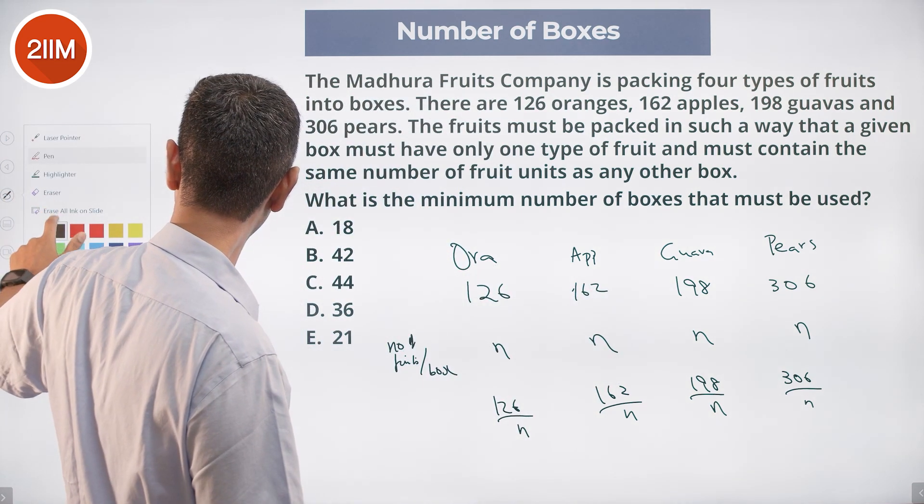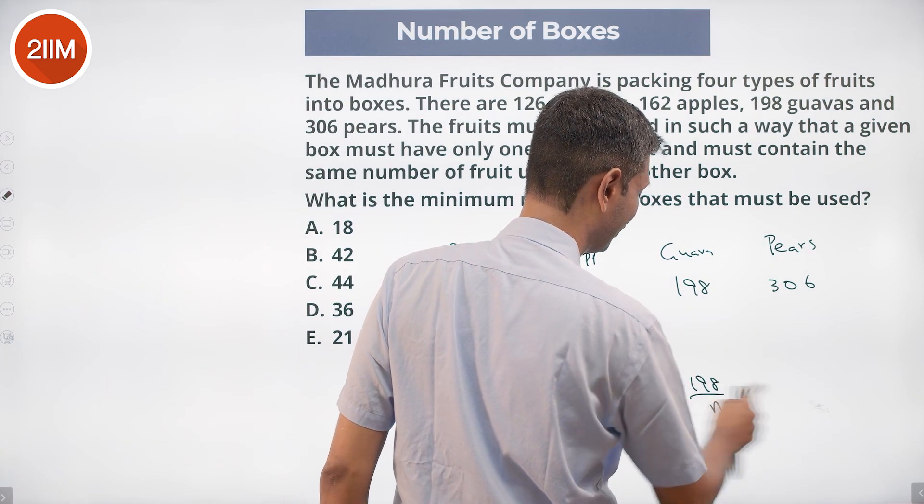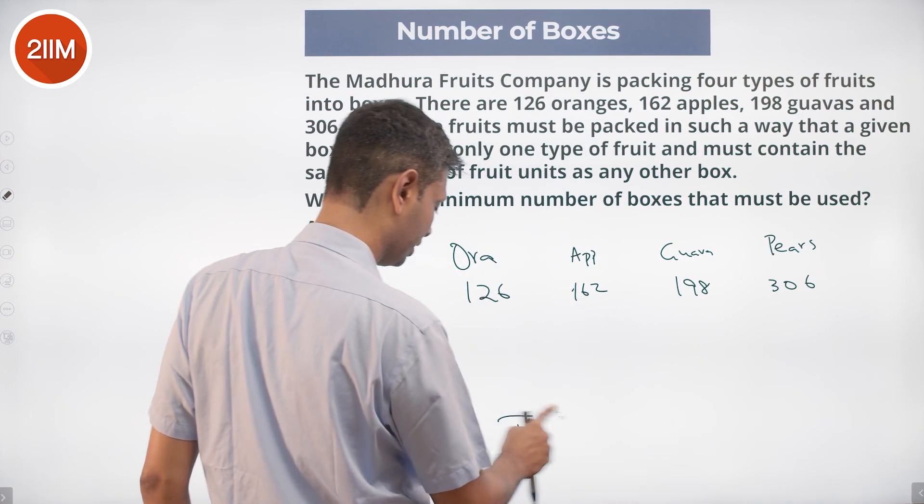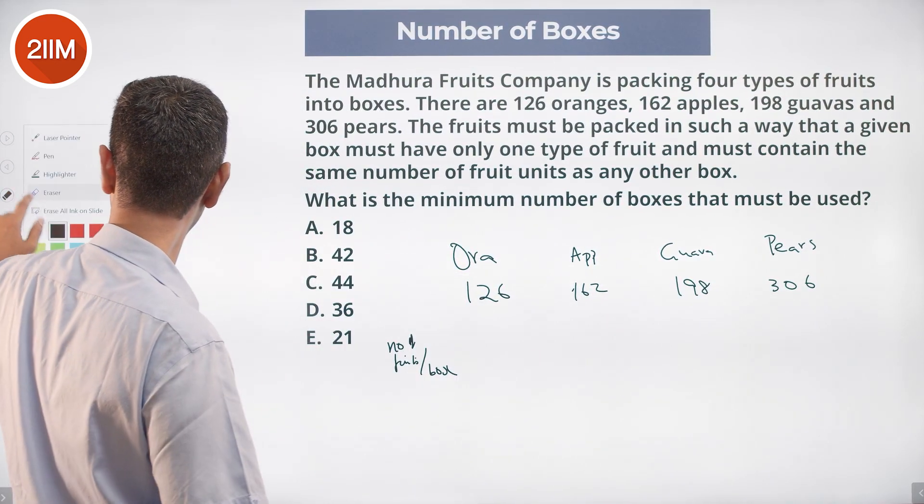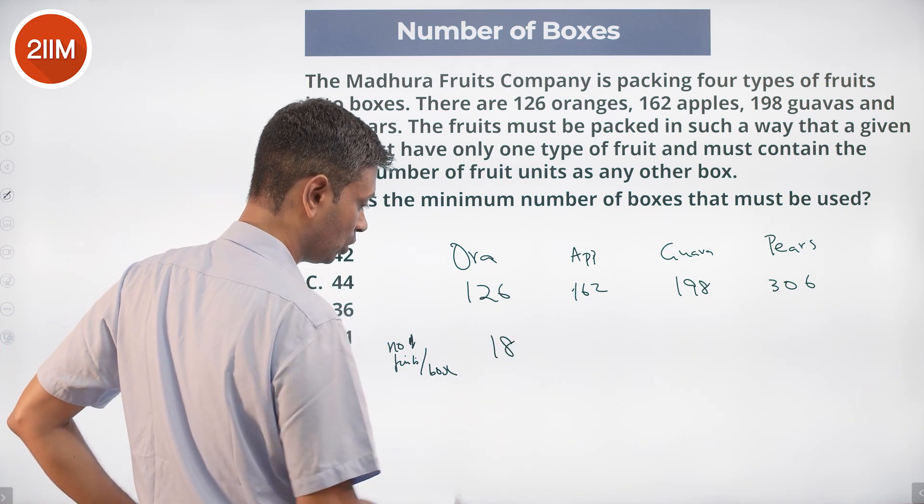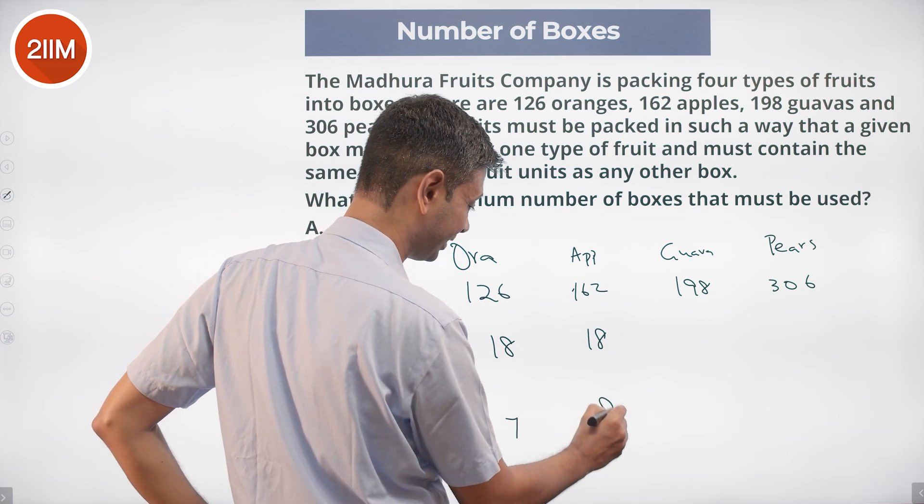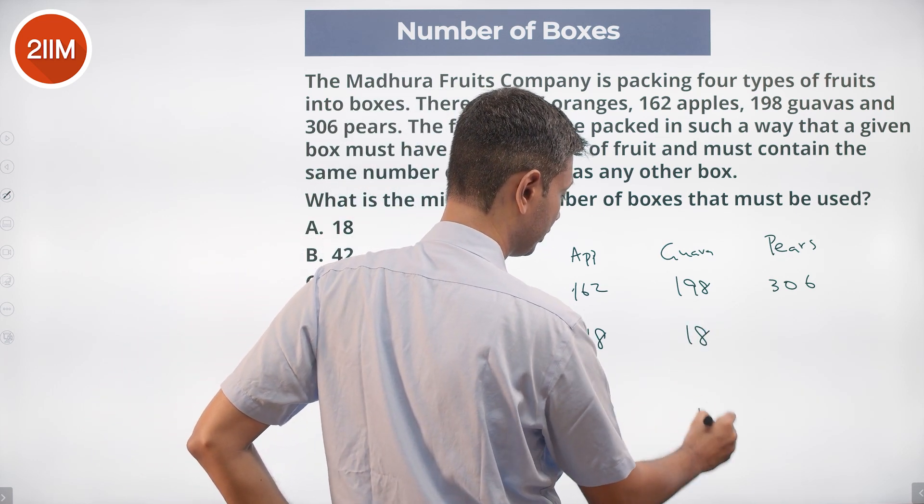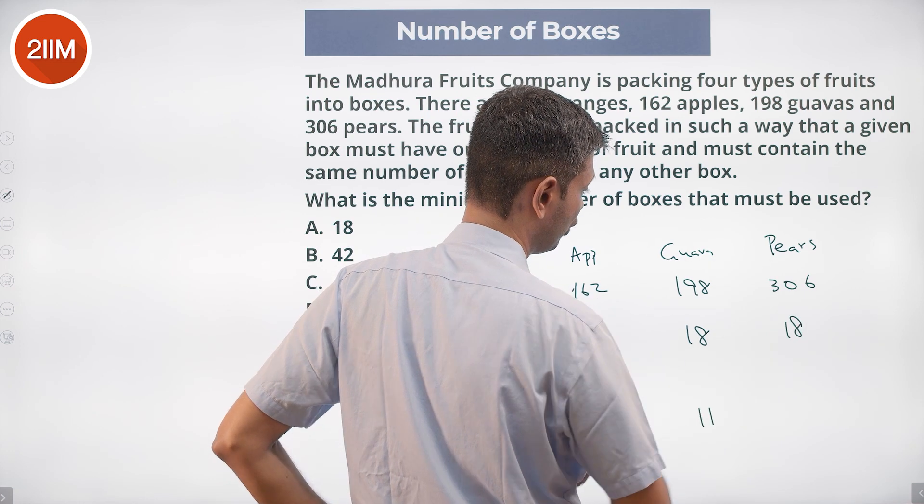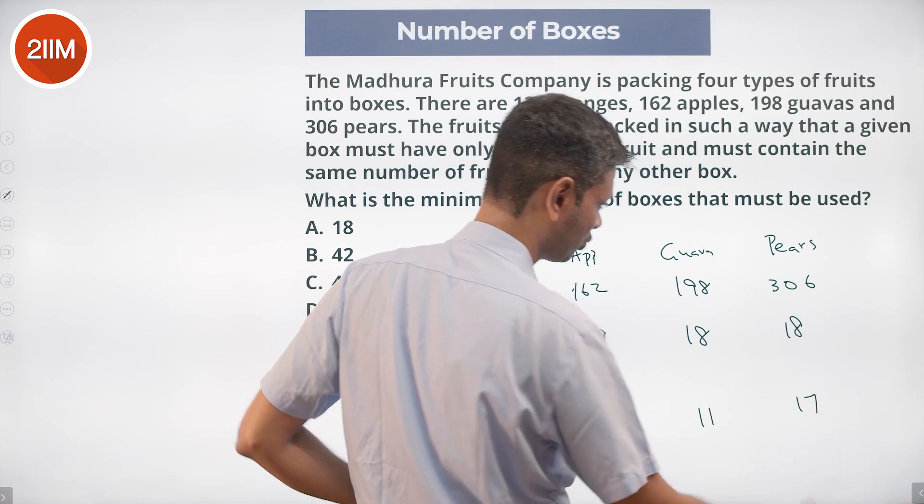So I'm going to carve out an 18 and take it from there. 126 by 18 is 7, 162 by 18 is 9, 198 by 18 is 11, and 306 by 18 is 153 by 9, which is 17.